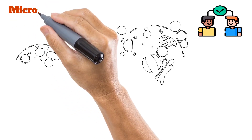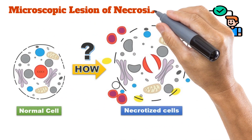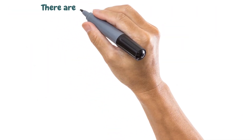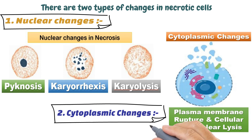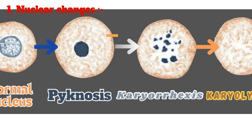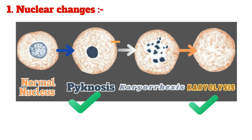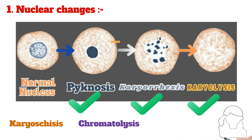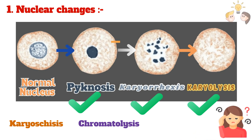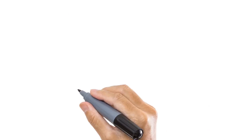Now let's understand the microscopic lesion of necrosis. There are two types of changes in necrotic cells: the first type is nuclear changes and the second type is cytoplasmic changes. Nuclear changes include pyknosis, karyolysis, karyorrhexis, and chromatolysis. They are all confusing, but I will make it simple.